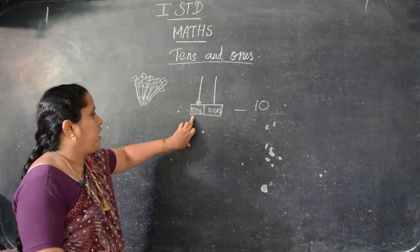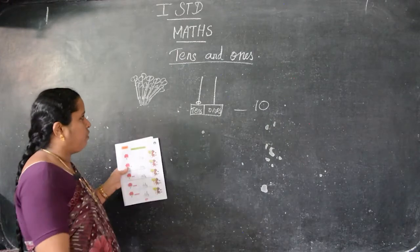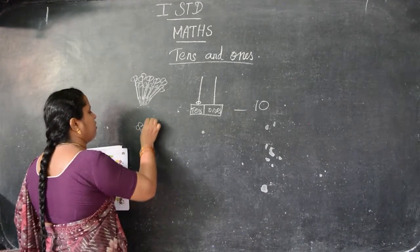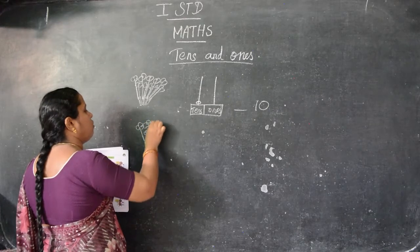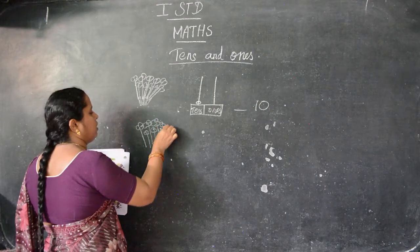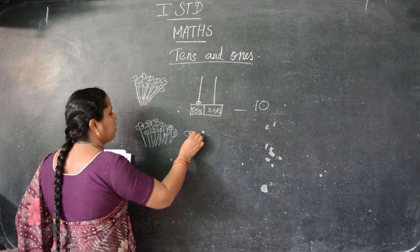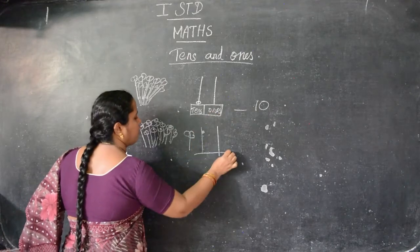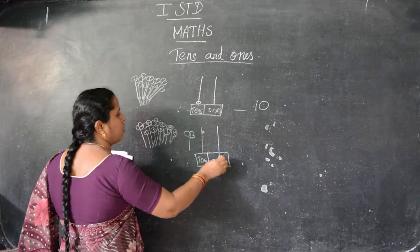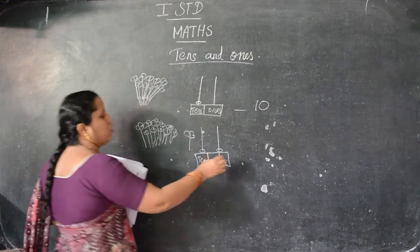Here how many 10s? 1 ten. So 1 here. And the 1s: 0. So this is 10s — like that for 20 we have to write here. Count: 1, 2, 3, 4, 5, 6, 7, 8, 9, 10 and here single 1s. So we are drawing the 10s and 1s here — how many 10s? 1 ten. And how many singles here? Only 1. So this is 11.